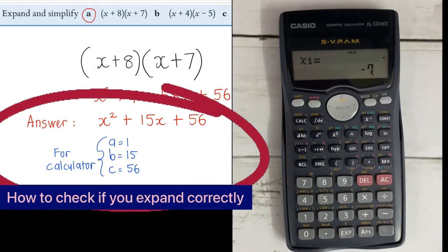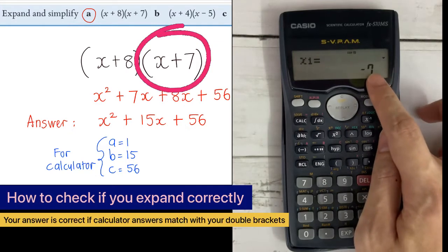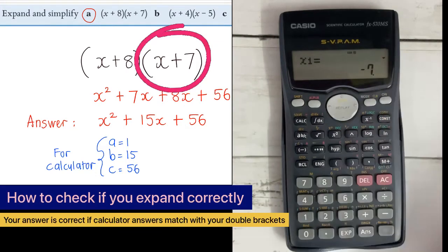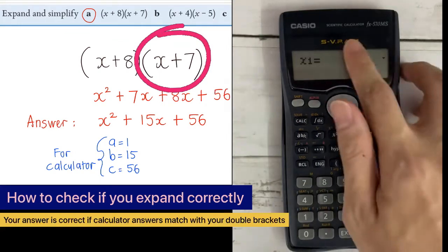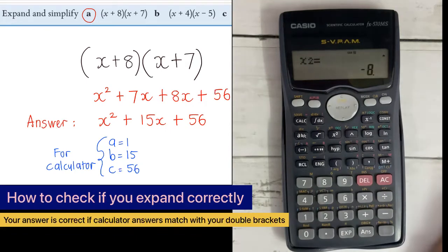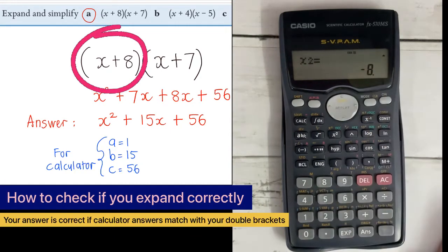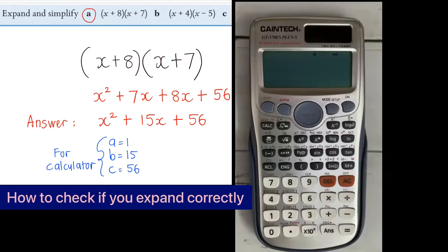The answer is out. x1 is for the first bracket. Now pay attention: if the calculator shows you negative 7, the bracket is x plus 7 — reverse the symbol. So negative 7 means it must be x plus 7. And x2 is negative 8, so reverse the symbol — your bracket is x plus 8. There you go.